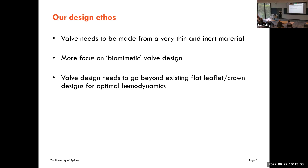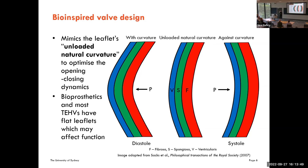Current tissue valves have flat leaflets that form curvature only because of the way they are mounted, not by design. Curvature is one of the key design aspects we are focusing on. The pulmonary heart valve has an unloaded natural curvature — in its resting position it has curvature, not flatness. During diastole when fully closed it further bends with this curvature, and during systole when fully open it briefly bends against this curvature.